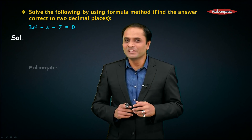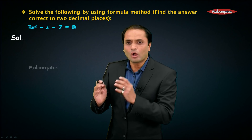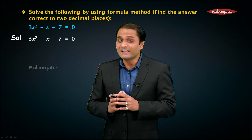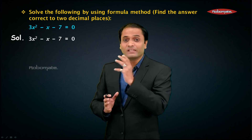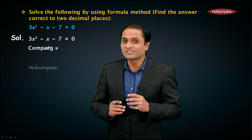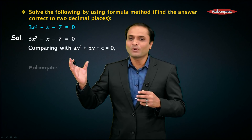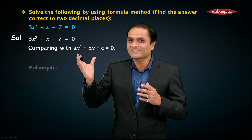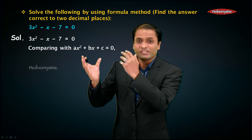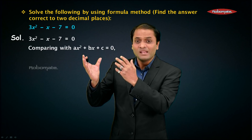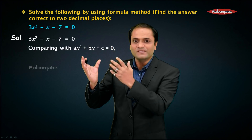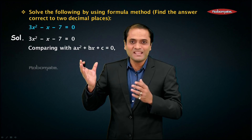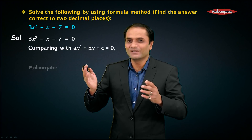Let's get started with the solution. First step, copy the equation as it is in your solution. Next, find out whether the given equation is in standard form. The standard form of a quadratic equation is ax² + bx + c = 0. The given equation is in this form. Let us compare it with the standard form to find the values of a, b, and c, which we require in the formula method.